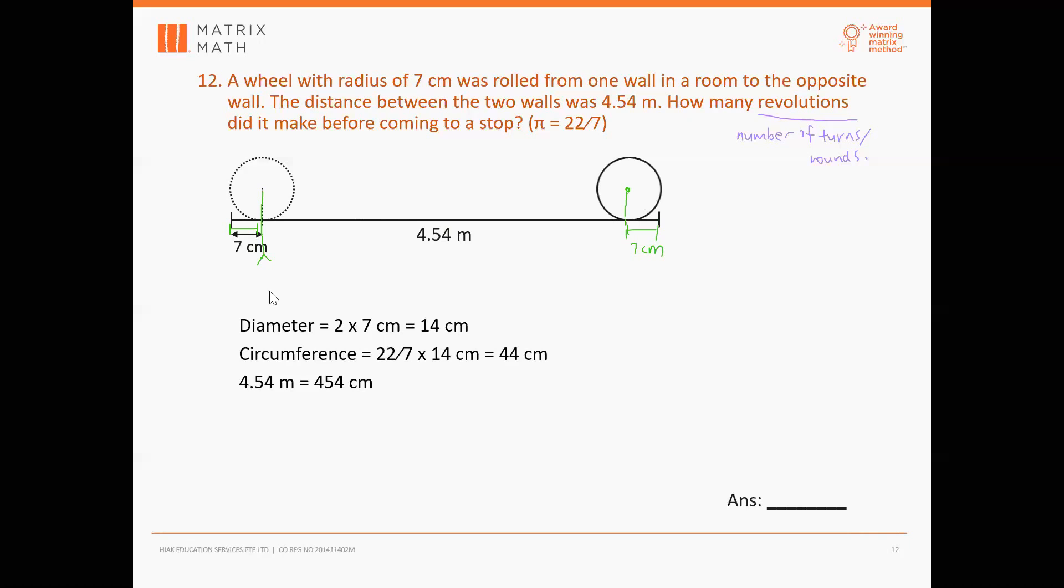Everyone agree with that? Okay, so this is why you've got to minus 7 and minus 7. You minus 7 at the two ends where the surface of the ball will not be able to touch the floor. Okay, so what can I do after this? After I minus away the 14s?